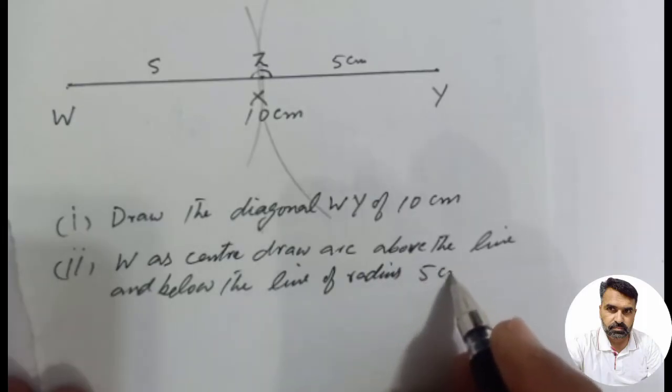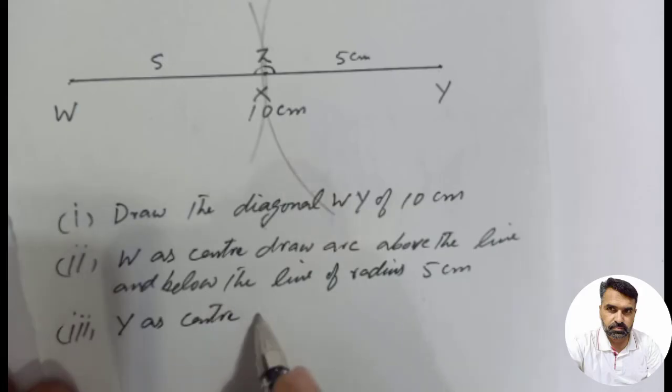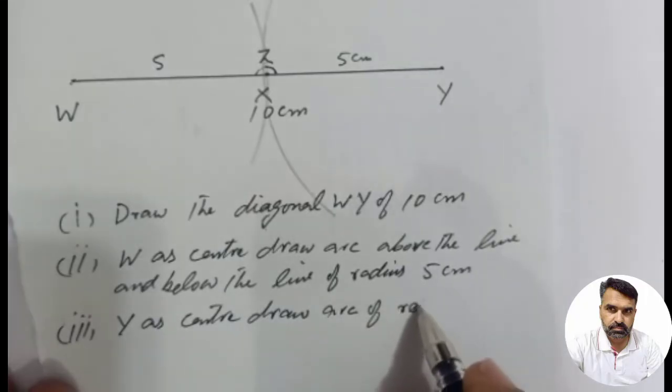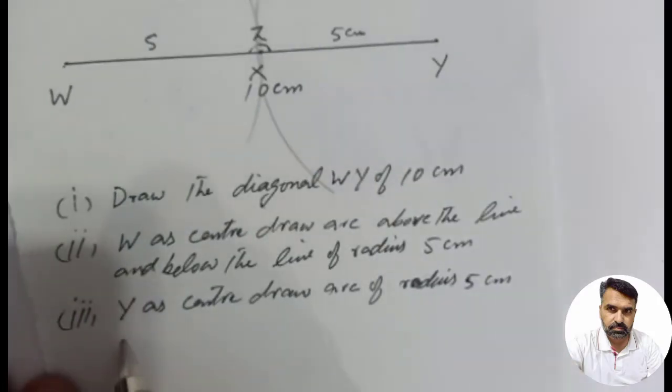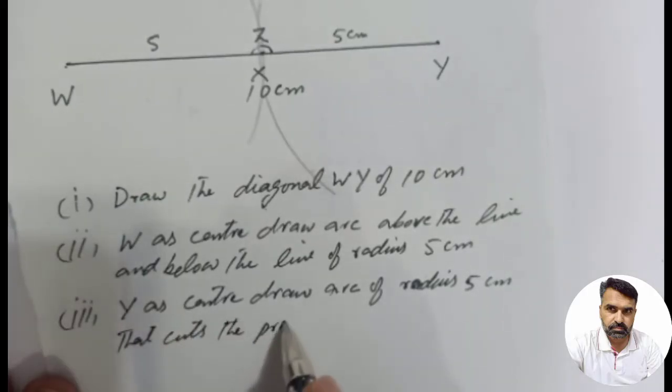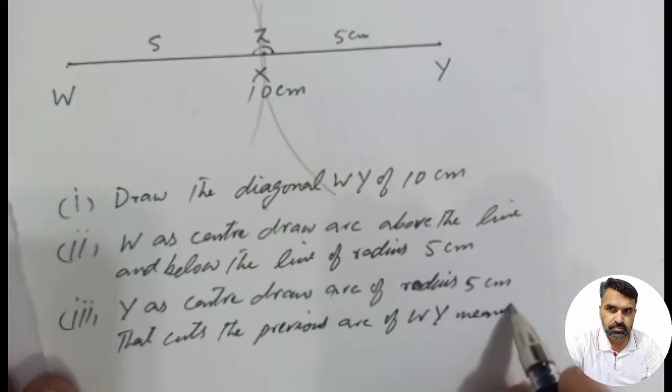Number 3: With Y as center, draw arcs of radius 5 cm which cuts the previous arcs on either side of line WY.